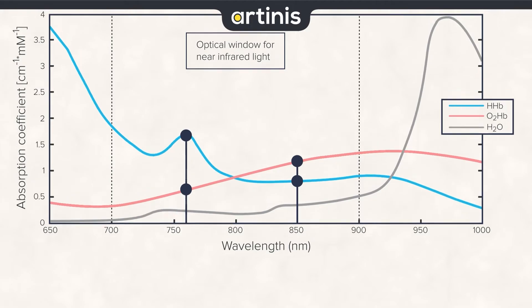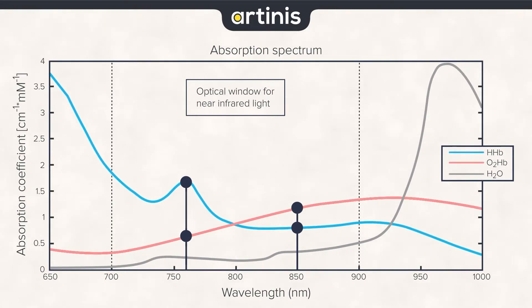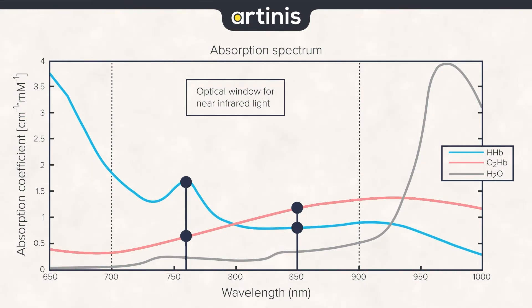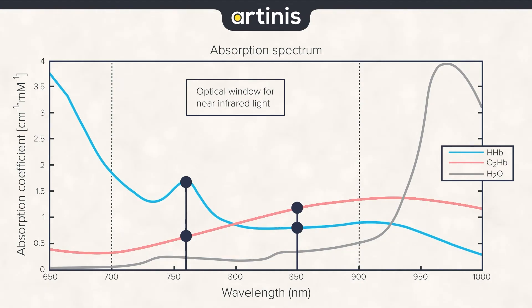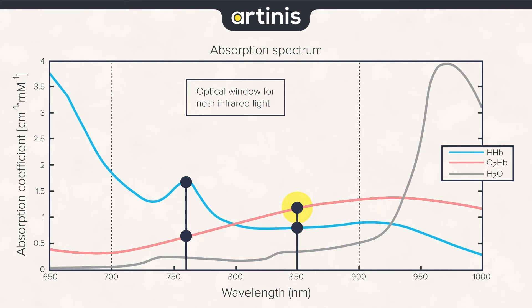Measuring differences in light absorption allows us to estimate concentration changes, thanks to the intrinsic absorption of light by specific chromophores. In this graph, the x-axis shows the near-infrared wavelength from 650 to 1000 nm, and the y-axis shows the absorption coefficient. We focus on two chromophores: oxyhemoglobin in red and deoxyhemoglobin in blue, because they can tell us about oxygen consumption. For our systems, we use two specific wavelengths: 760 nm, where deoxyhemoglobin is the main absorber, and 850 nm, where oxyhemoglobin is the main absorber.